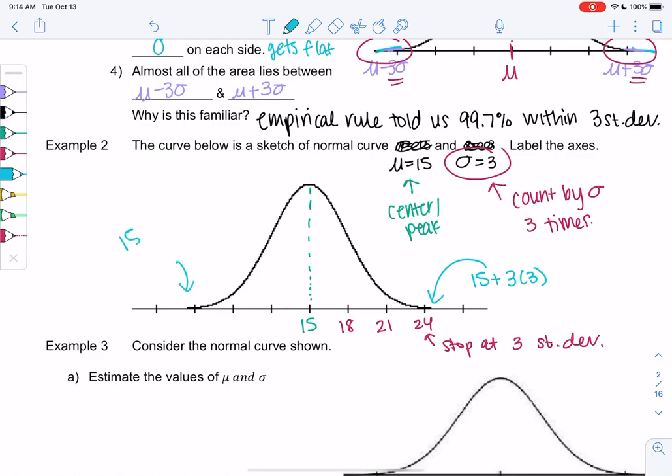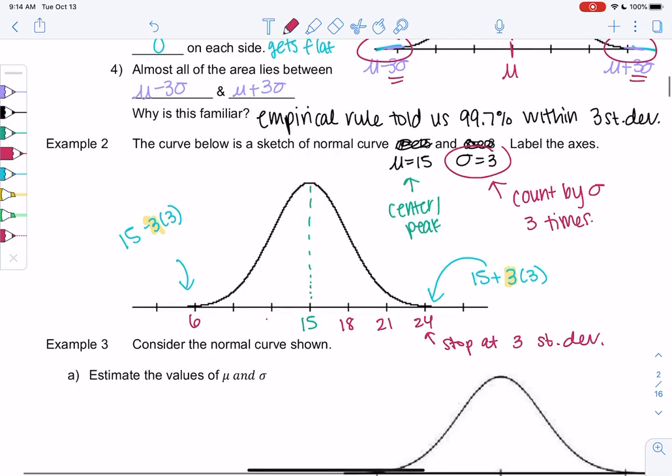So on the left side, it would be 15 minus three times three, which is six. And so that's how I know the flat part's at six for three standard deviations. But otherwise we can subtract three on the left side. So 15 minus three is 12. 12 minus three is nine. Nine minus three is six.